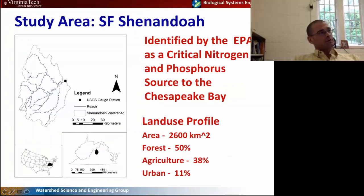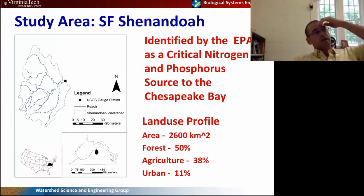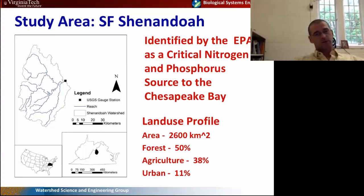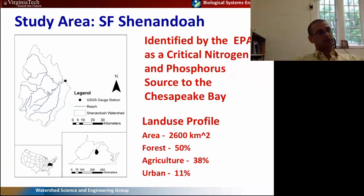The test bed or study area we're working in is the South Fork of the Shenandoah River watershed. It's located mainly in Virginia, but a small portion in West Virginia, in the Shenandoah Valley. It's been identified by the Environmental Protection Agency as a critical nitrogen and phosphorus source area to Chesapeake Bay. The Chesapeake Bay right now is subject to the largest and most expensive TMDL ever developed, so there's real pressure on these big agricultural centers to reduce their contribution.